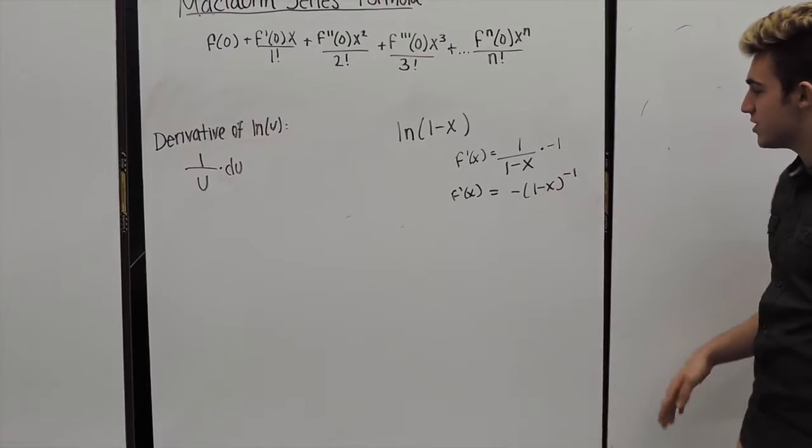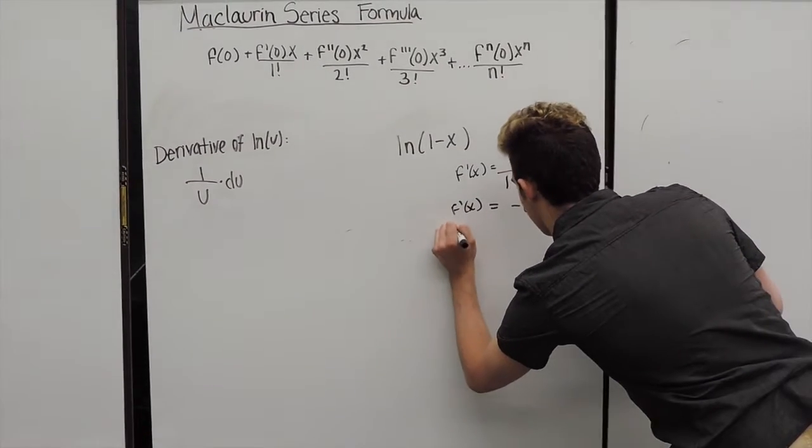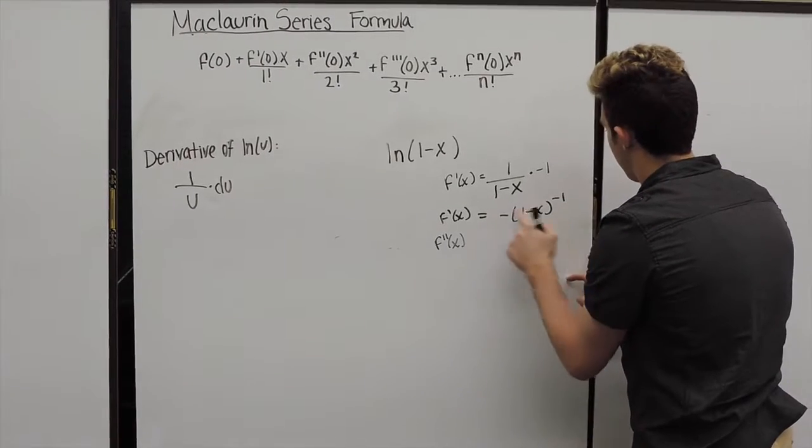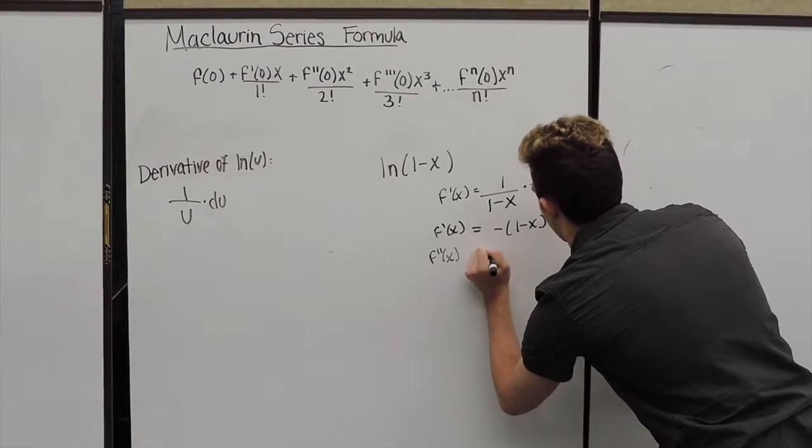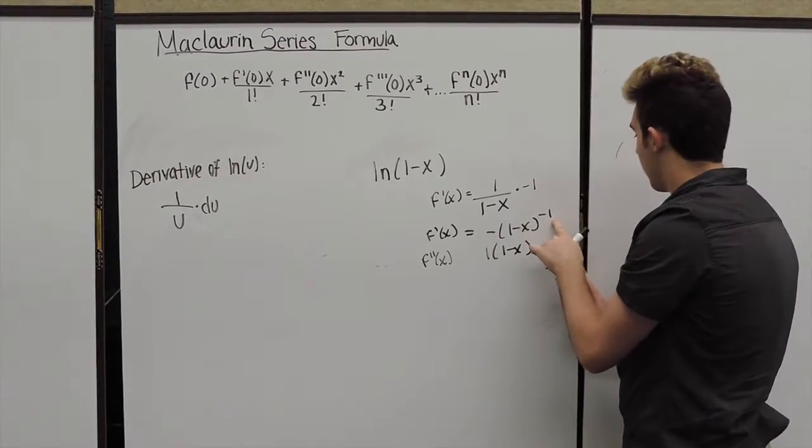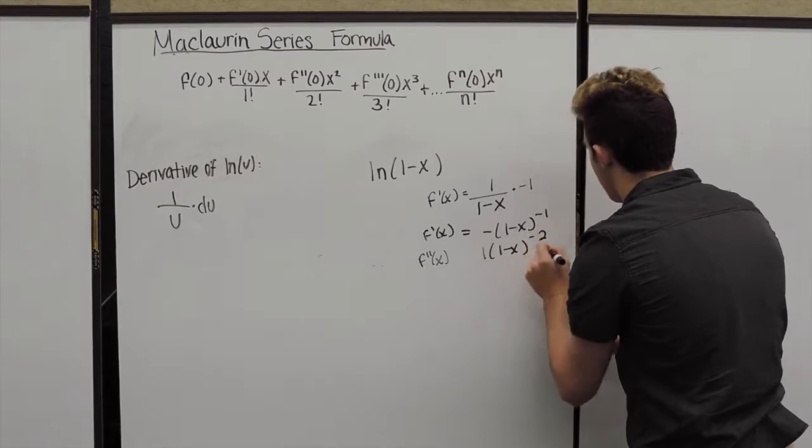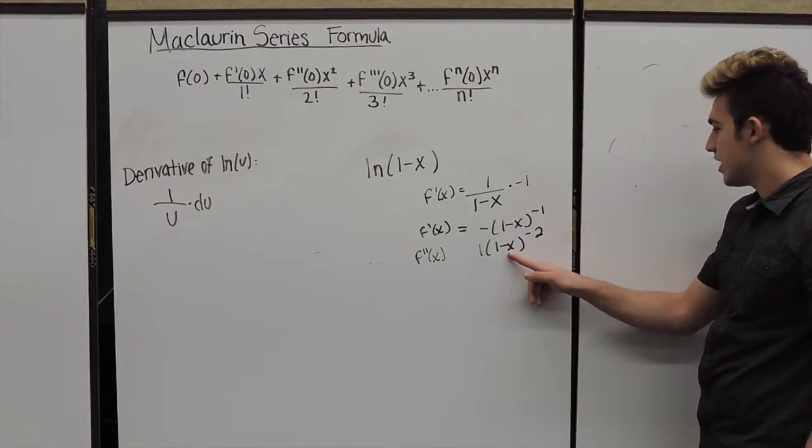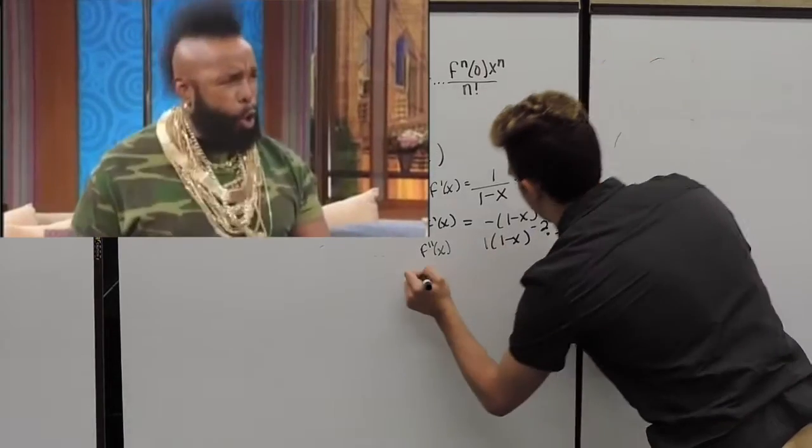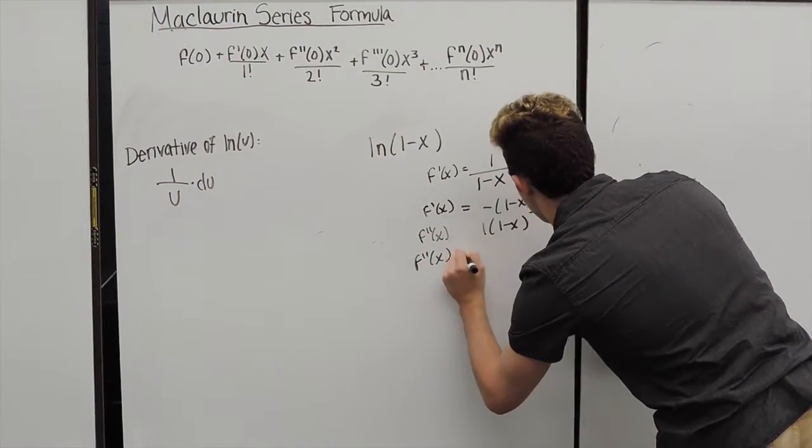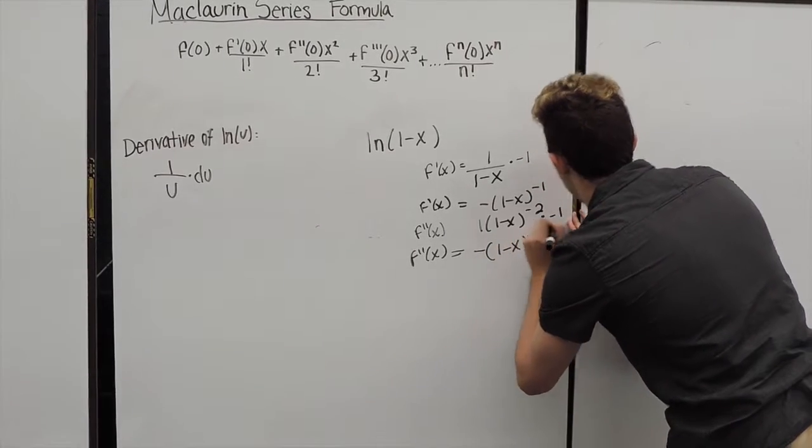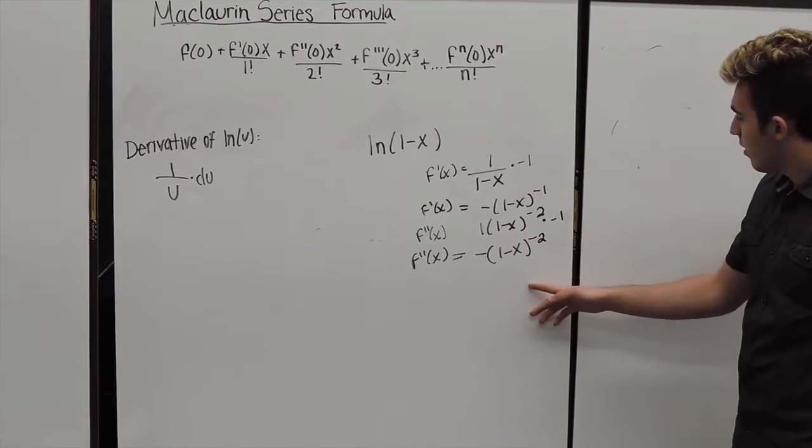So we'd have f double prime of x using our power rule. We're going to multiply that negative 1 down. So we're going to have a positive 1, 1 minus x, this goes down to power, it goes to our negative 2. And do not forget chain rule, multiply that by negative 1. That's going to be our negative 1 minus x.